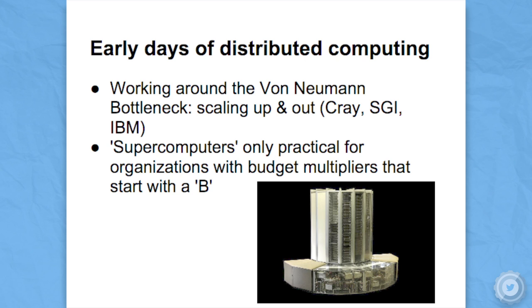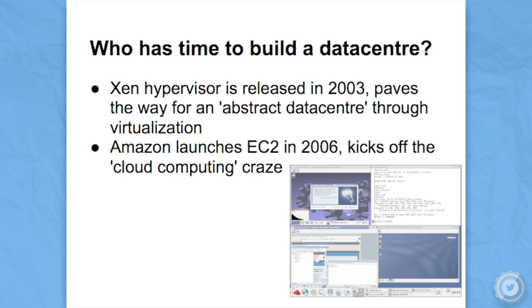However, in 2003, a project called the Xen Hypervisor was released, and this paved the way for virtualization for everyone and large-scale abstract data centers. In 2006, Amazon beta'd their EC2 project, which is an implementation of the Xen Hypervisor. That by the way is a screenshot of NetBSD and three Linux distributions running on Xen. Very cool — thanks Wikipedia.